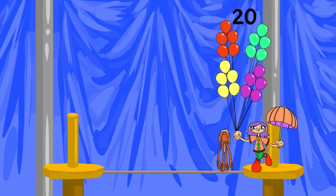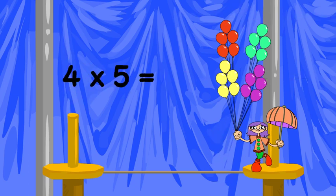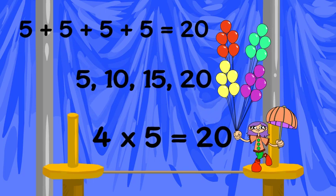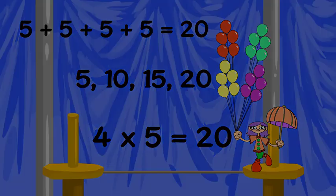twenty. Or we can multiply: four times five is twenty. You can see that multiplication makes adding equal groups fast and easy.